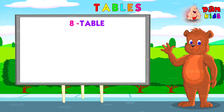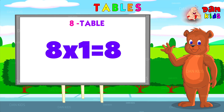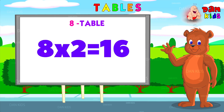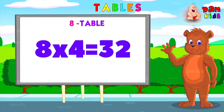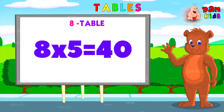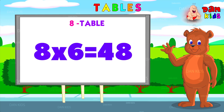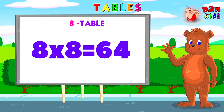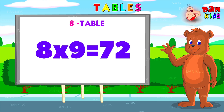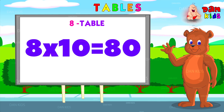Now the eighth table. Eight ones are eight. Eight twos are sixteen. Eight threes are twenty-four. Eight fours are thirty-two. Eight fives are forty. Eight sixes are forty-eight. Eight sevens are fifty-six. Eight eights are sixty-four. Eight nines are seventy-two. Eight tens are eighty.